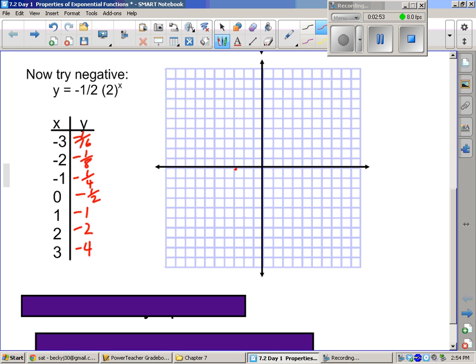So that was negative 1/16th, negative 1/8th, negative 1/4th, negative 1/2, negative 1, negative 2, negative 4. So negative 3, negative 1/16th is right there. 0, negative 1/2. 1, negative 1. 2, negative 2. And 3, negative 4. So this one's falling. The other one was rising. And then we have our dotted line here.